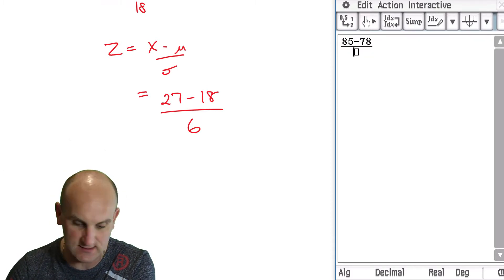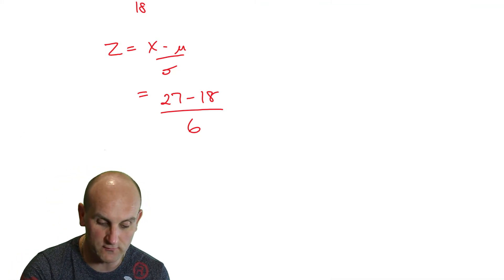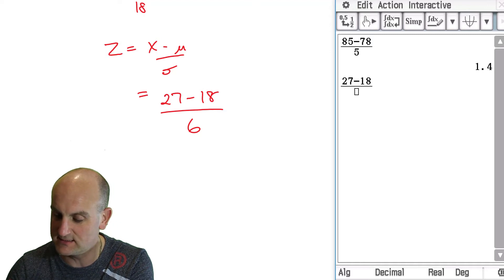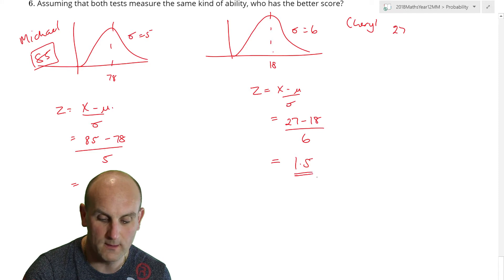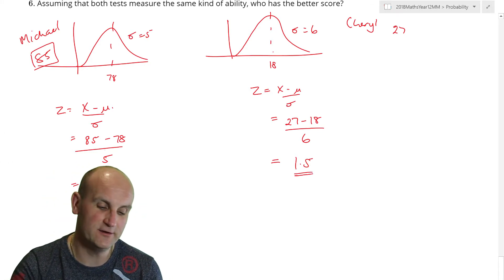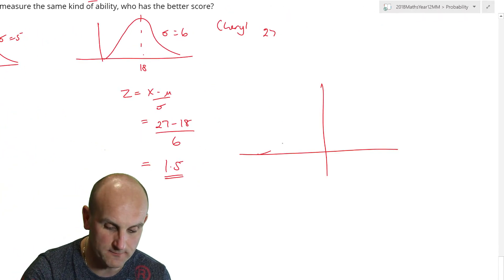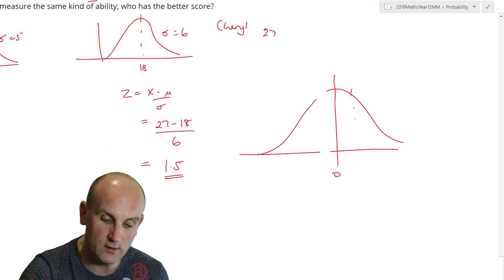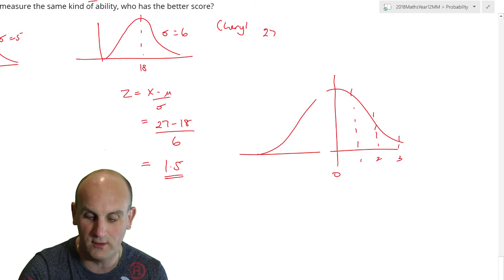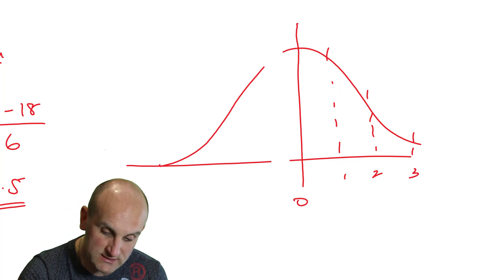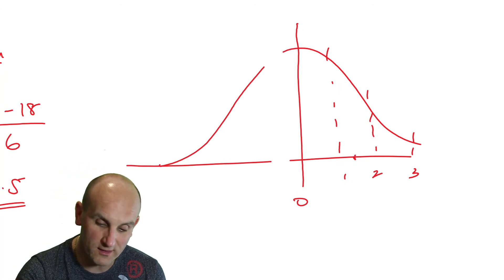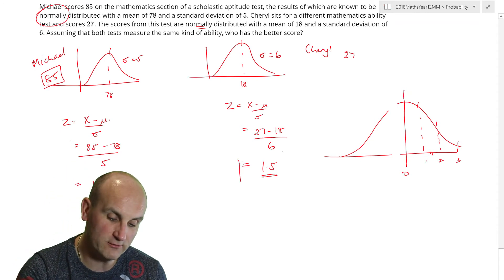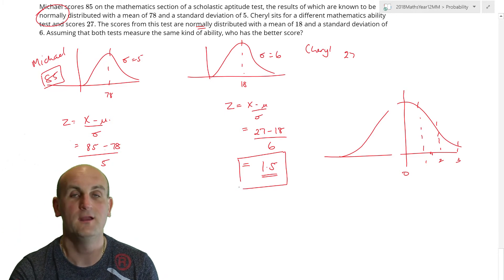So, I'm going to fire up my calculator and let's work out what these are. We've got 85 minus 78 divided by 5. So, that gives Michael a Z score of 1.4. And let's go back to Cheryl's, which is 27 minus 18 divided by 6, which gives 1.5. So, who did better? Well, let's go back to this idea of Z scores. We know that for a standard normal distribution, which that is nothing like. Wow, drawing these is really hard. We know that mean is zero. We know that the first standard deviation is one. The second is two. And the third one is three. Well, Michael got 1.4. So, that puts him here. But Cheryl got 1.5. Go Cheryl. So, what it actually means is by comparing their Z scores, we found out that Cheryl, because she got a higher Z score, which put her more to the end of the bell curve, she actually did better.